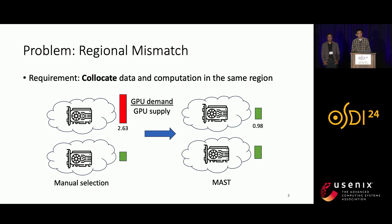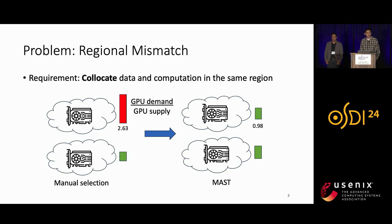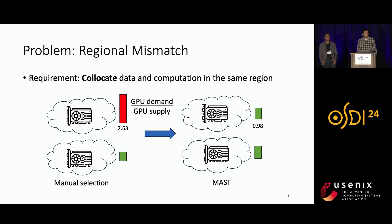For example, in the past at Meta, users' manual selection led to a GPU demand over supply rate of 2.6 in certain data center regions. And in public clouds today, people still need to make such manual selections most of the time, which means they are likely to meet similar problems. Today, with the introduction of MAST, Meta has successfully reduced that rate to 0.98.